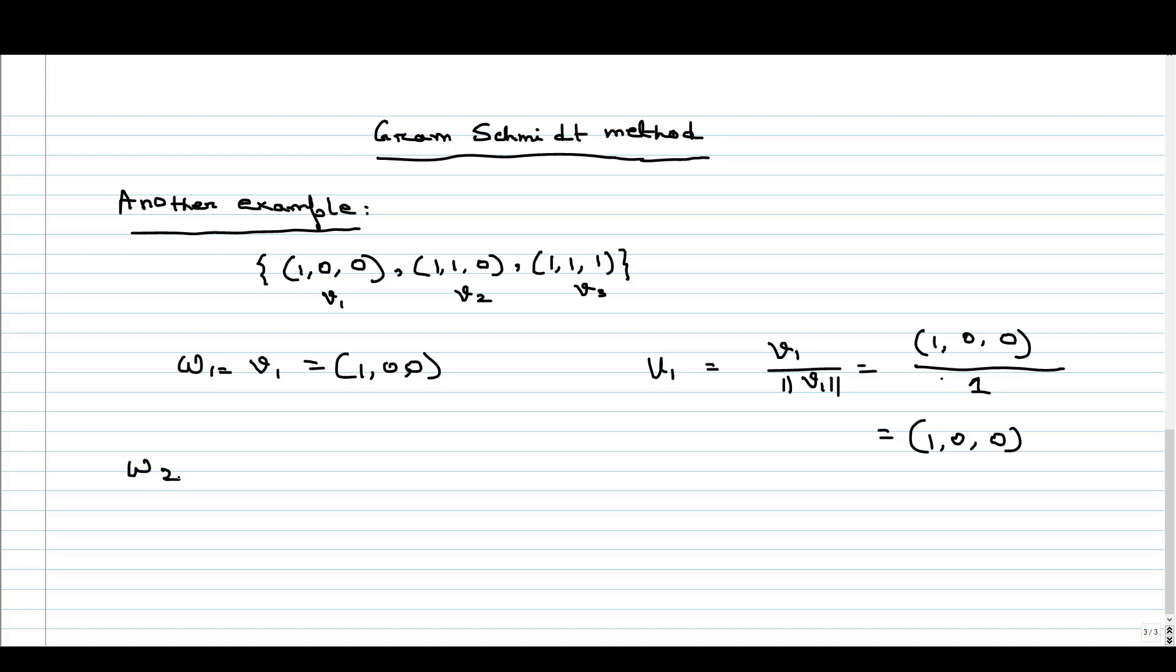Now we have to calculate the second one, W2. For W2, what we have to do? We have to take V2 and subtract that V2, the inner product of V2 and U1. We have to take the inner product and multiply it with U1 and subtract this vector from V2.